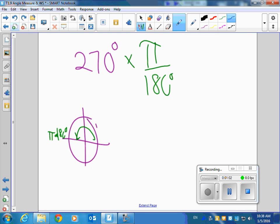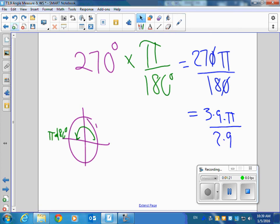So my answer is going to be 270 pi over 180. And the tens will cancel. You divide this by nine and this by nine. You'll get three times nine pi over two times nine. Now what cancels out? The nines, and you'll get three pi over two.